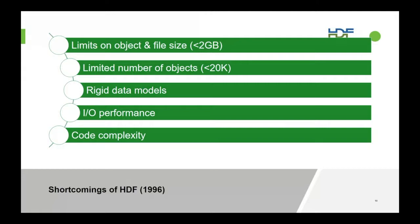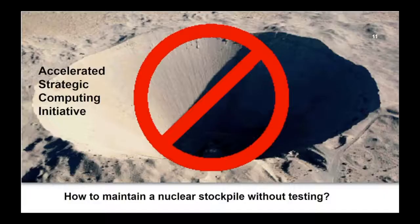By the middle of the 90s, however, we began to realize that HDF had some limitations. You couldn't have a file bigger than 2 gigabytes. The number of objects was limited to about 20,000 in an HDF file. The data models were rather rigid — if you ever needed a new data model, you had to recode it, which made the code more and more complex. And I/O performance was fine for the 80s, but it really didn't anticipate the massive parallel systems we would be seeing. So that was a challenge for us.